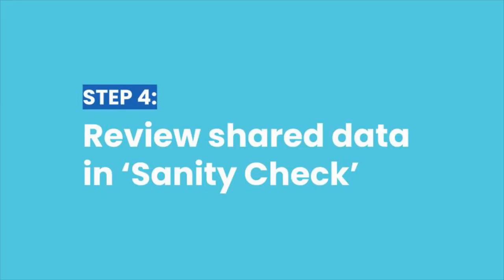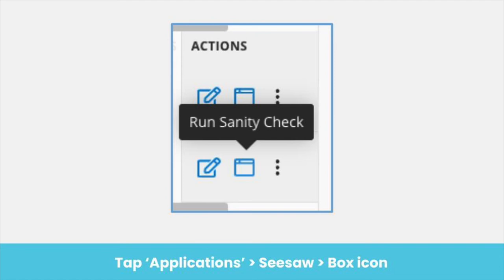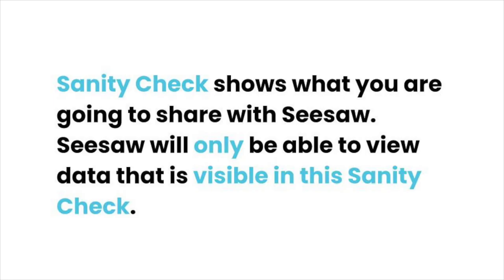Once you have set your sharing rules, check the data you are sharing within RosterServer using Sanity Check. Tap Applications and find Seesaw. Hover over the box next to the paper and pencil icon and tap to run a Sanity Check. Sanity Check shows what you are going to share with Seesaw — Seesaw will only be able to view data that is visible in this Sanity Check. If something is missing, revise your sharing rules.